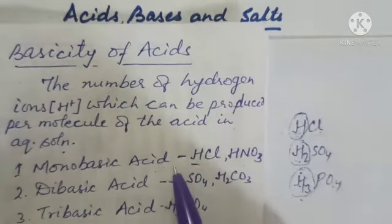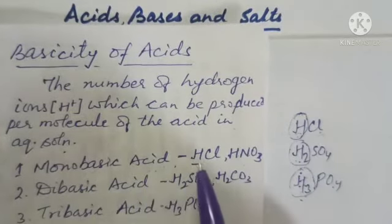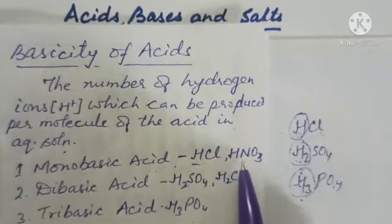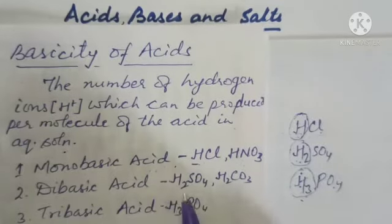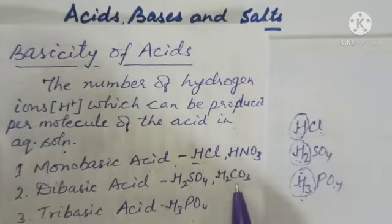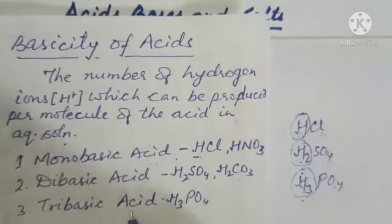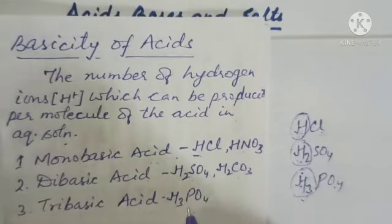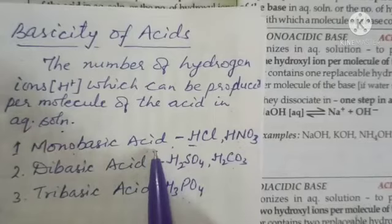On the basis of basicity, there are three types of acids. First is monobasic acid — for example, hydrochloric acid, nitric acid, and acetic acid. Second is dibasic acid — examples are sulfuric acid, sulfurous acid, and carbonic acid. Third is tribasic acid — an example is phosphoric acid.